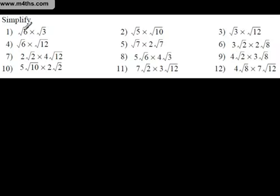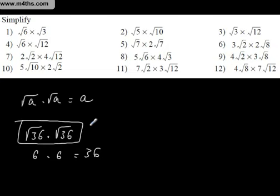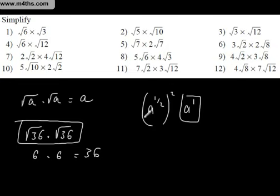When multiplying surds, √a multiplied by √a is going to give me a. If we take √36 and multiply it by √36, the square root of 36 is 6, so we're going to get 36 — you're squaring the square root. Another way of looking at this is as an index: a to the power of one-half, which is the square root, squared. We just multiply these two: 2 times one-half is 1.